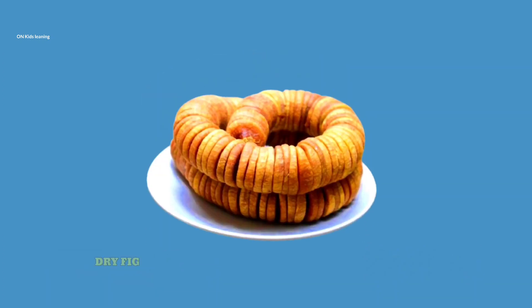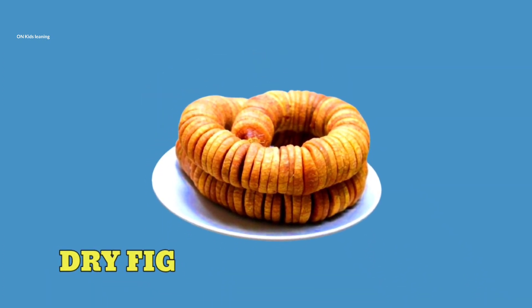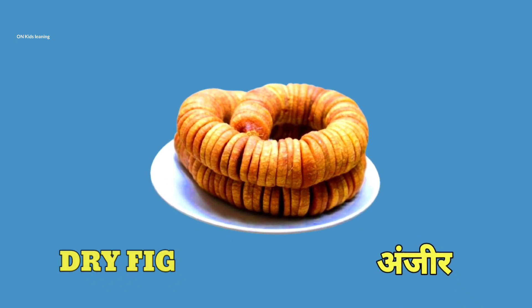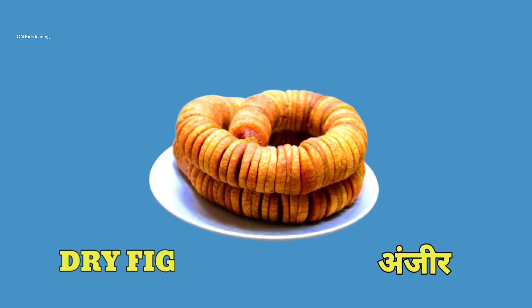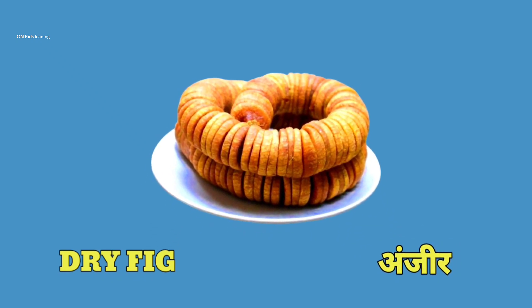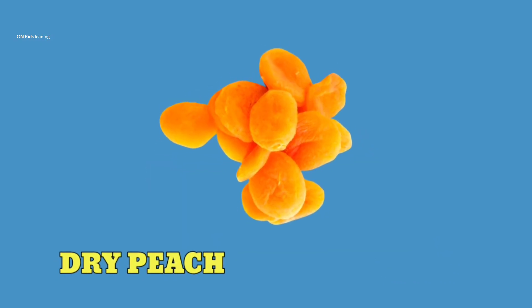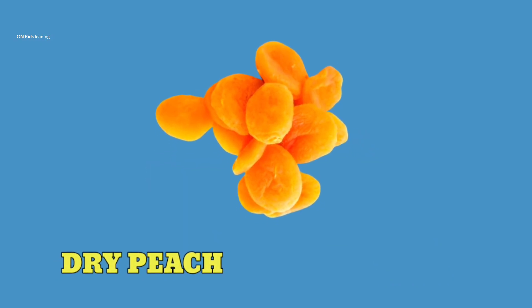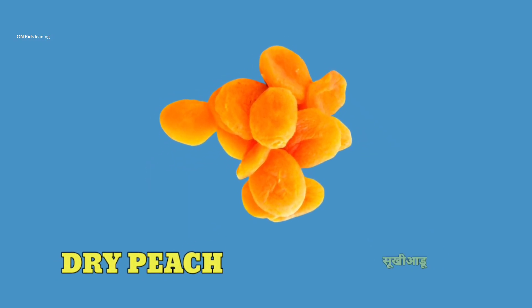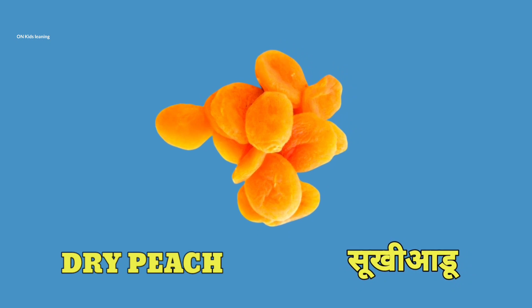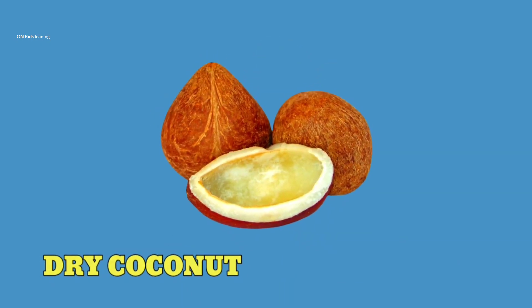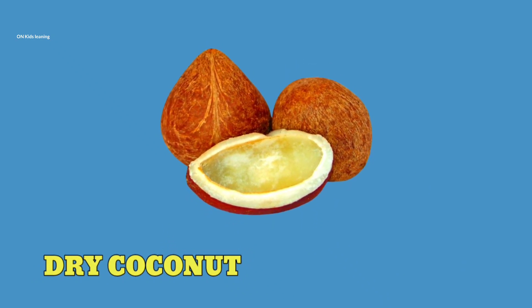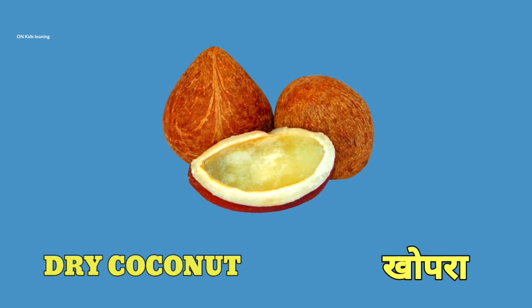Dry fig — dry fig means anjir. Dry peach — dry peach means sukhi aadu. Dry coconut — dry coconut means kopra.